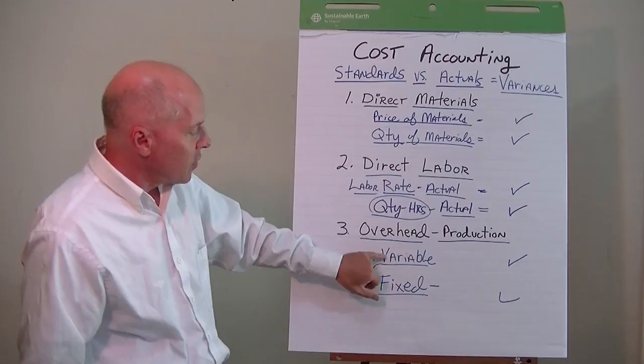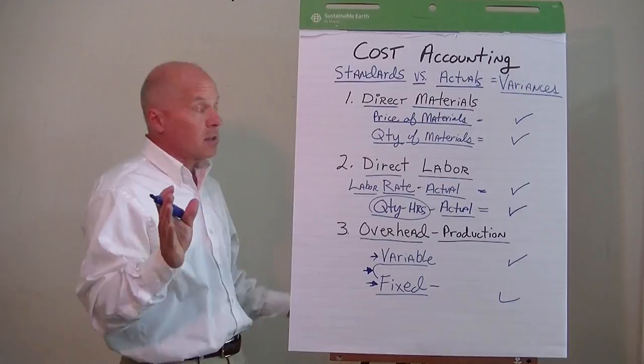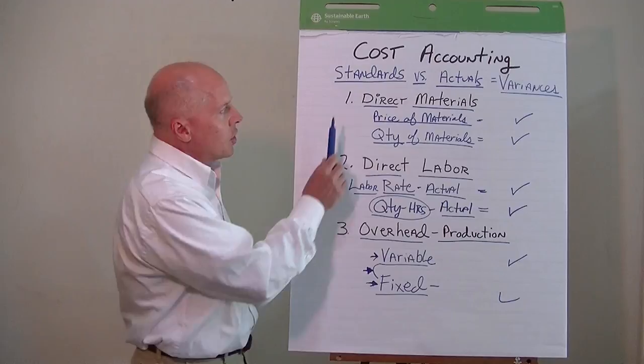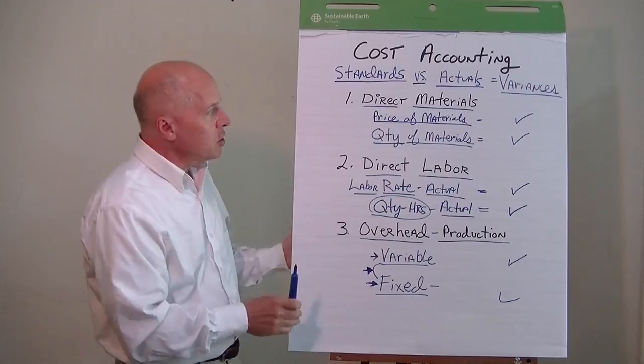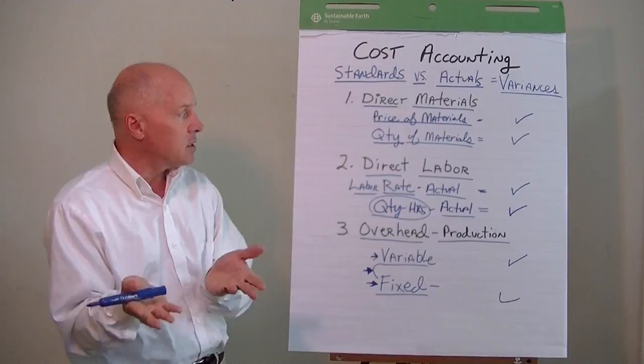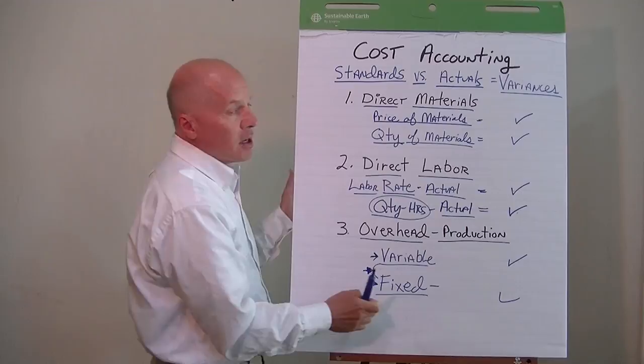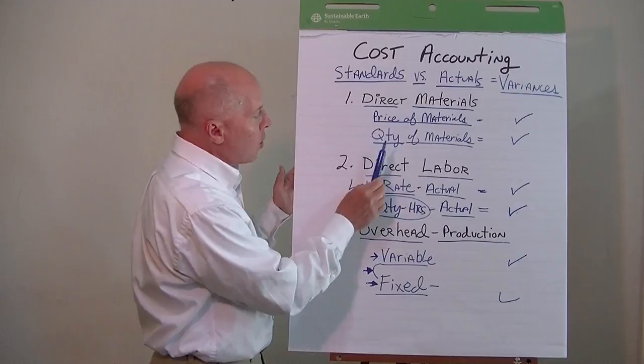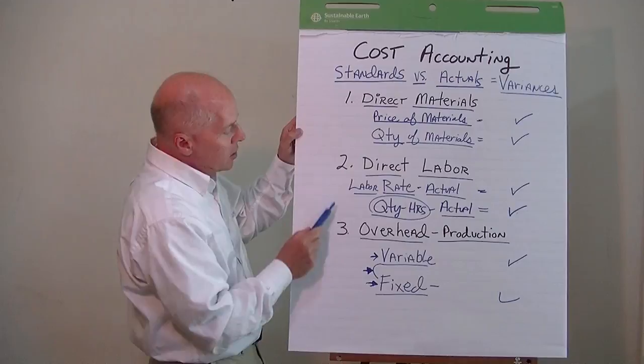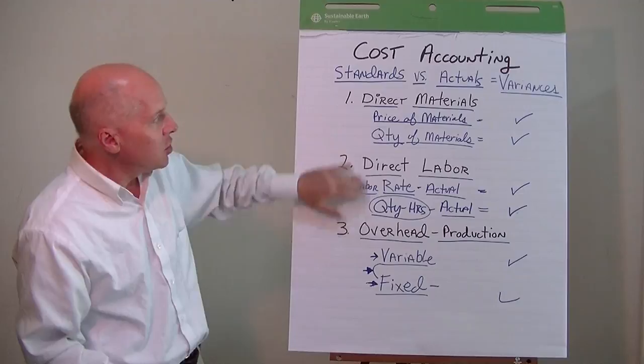Then we can calculate variances for variable and fixed overhead. The best way to understand all of this is to work through a really good example. In the next lesson, we'll work through an example — it's also in your case study workbook, so get that out so you can follow along. We'll actually calculate six variances covering the three major cost categories in the world of cost accounting, giving you some basic exposure to how it all works.